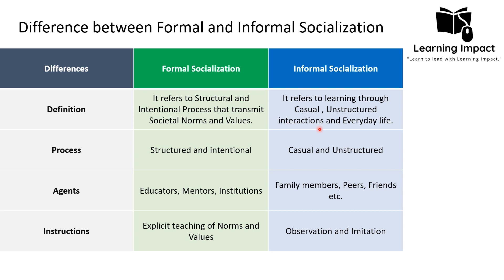In contrast, informal socialization refers to learning through casual and unstructured interaction which happens in our everyday life. For example, if we take a family dinner, family members interact naturally, share stories, and maybe some jokes. This is based on unstructured, casual interaction, which is called informal socialization.